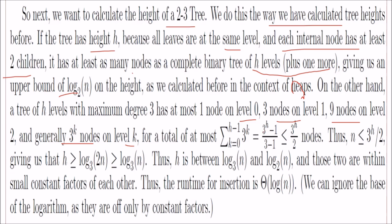It is 3 to the power h minus one divided by 3 minus 1, that is 3 to the power h by 2. We can conclude by saying that n is less than or equal to 3 to the power h by 2, giving us h equal to log base 2 of n and log base 3 of n. So h is between log n and log base 3 n, and those two are within small constant factors of each other. Thus, the runtime of insertion is order of log n. We can ignore the base because they are only constant factors.